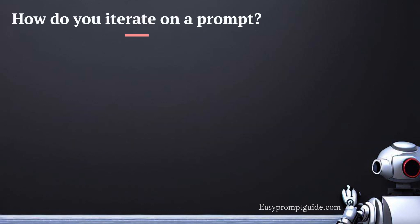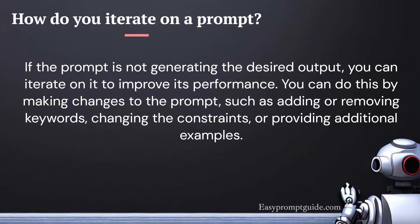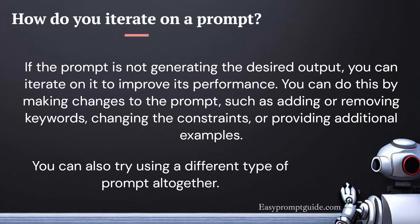How do you iterate on a prompt? If the prompt is not generating the desired output, you can iterate on it to improve its performance. You can do this by making changes to the prompt, such as adding or removing keywords, changing the constraints, or providing additional examples. You can also try using a different type of prompt altogether.